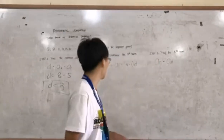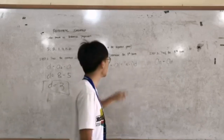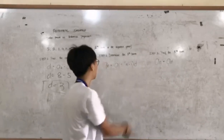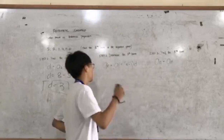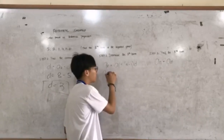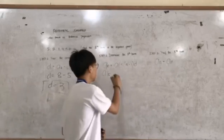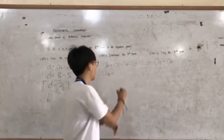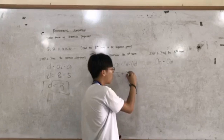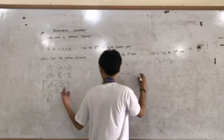Step number two: determine the nth term. To determine the nth term you should use the formula a sub n equals a sub 1 plus open parenthesis n minus 1 close parenthesis times d. Now let's substitute: a sub 1 is 5, plus open parenthesis n minus 1 close parenthesis times d, where d is 3.